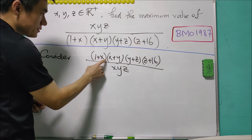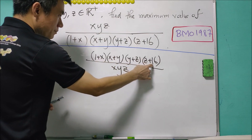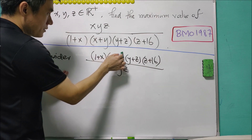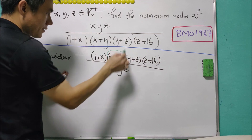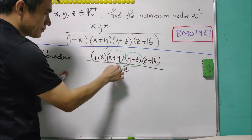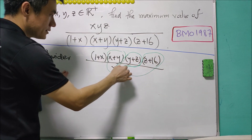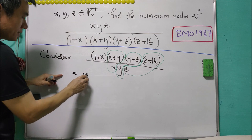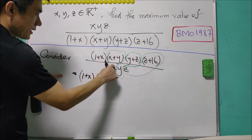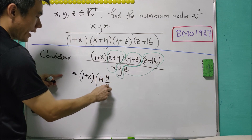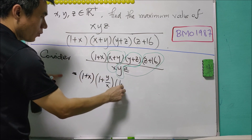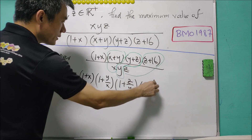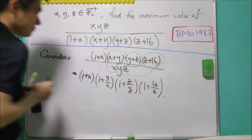The reciprocal expression is (1+X)(X+Y)(Y+Z)(Z+16). We can bring the first term over X, the next over Y, and the final one over Z. This gives us (1+X)(1+Y/X)(1+Z/Y)(1+16/Z).